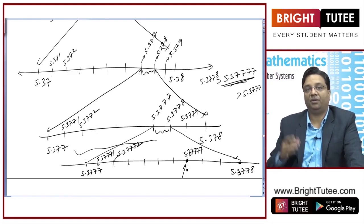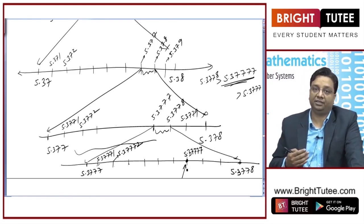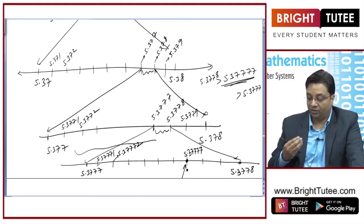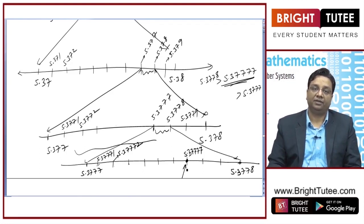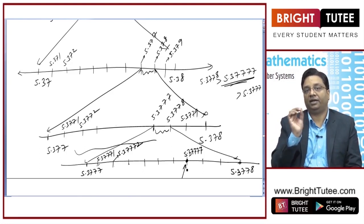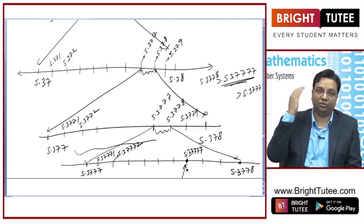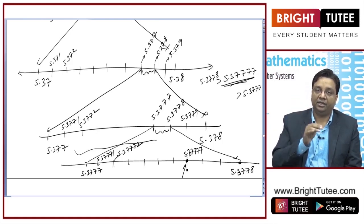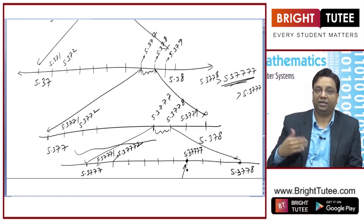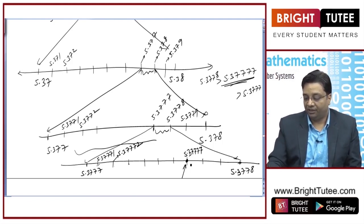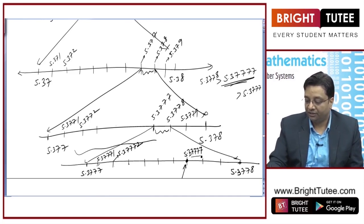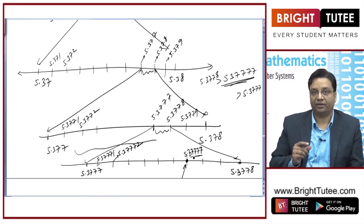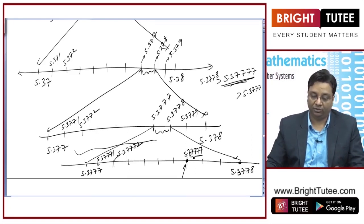This is the method of locating or representing a number through successive magnification. We have simply magnified the gaps repeatedly, visualizing that the number lies between progressively smaller intervals. Because every real number can be represented on the number line, we can find any number — including one with repeating decimals — through this process.